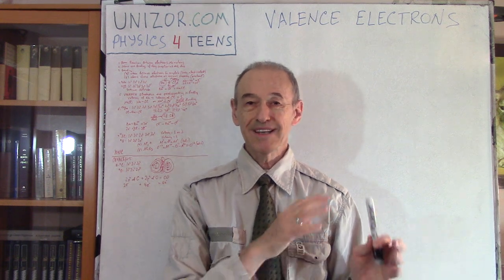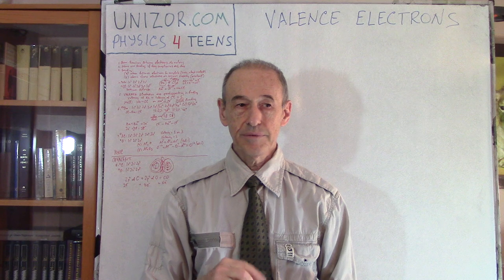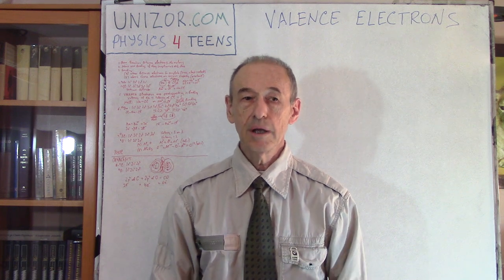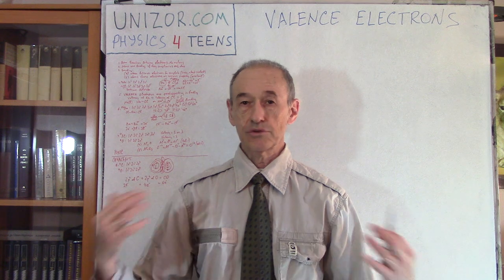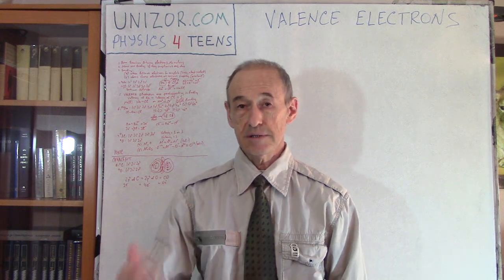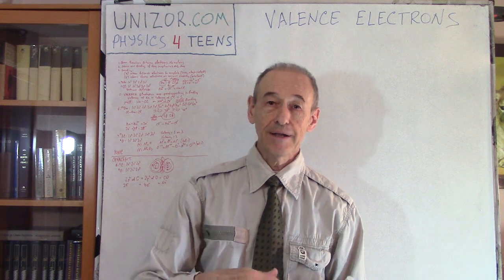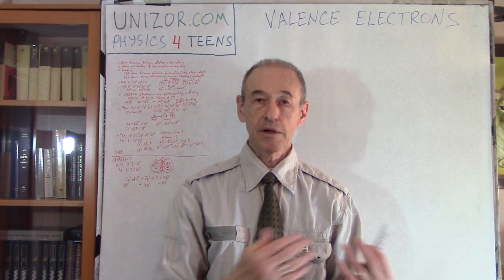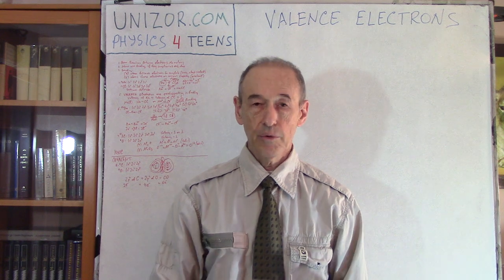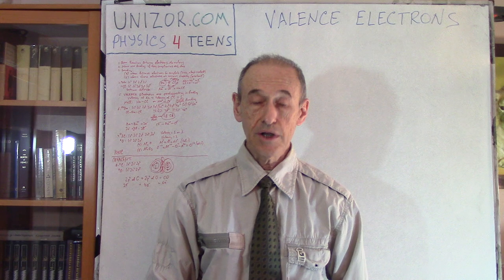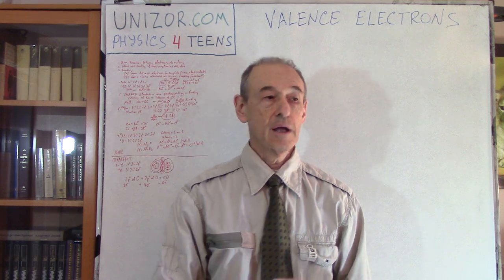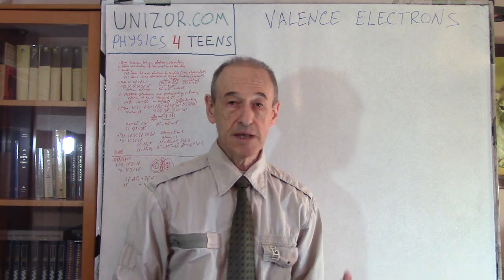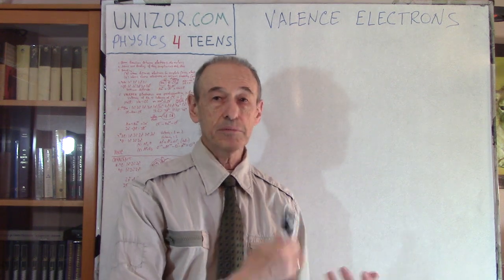This lecture will be mostly about examples rather than theory. The theory goes deep into quantum mechanics, which is beyond the level of this course. Certain things — like shells and subshells, the number of subshells per shell, and the number of electrons per subshell — you just have to take as axioms. I will use a few examples to explain on a practical level exactly what is happening.